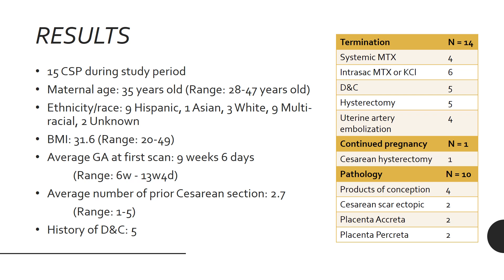Regarding pregnancy outcomes: fourteen terminated and one continued her pregnancy. The termination methods are listed on the slide, with five pregnancies ending in hysterectomy. The patient who continued her pregnancy had a preterm cesarean hysterectomy. Ten cases had specimens sent to pathology. The D&Cs all came back as products of conception. Of the six hysterectomies, two were diagnosed with cesarean scar ectopic on pathology, two were placenta accreta, and three were placenta percreta.